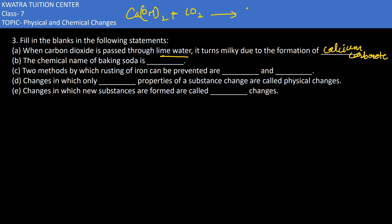The chemical name of baking soda is sodium hydrogen carbonate. It is NaHCO3, so sodium hydrogen carbonate. Two methods by which rusting of iron can be prevented are galvanization and painting.